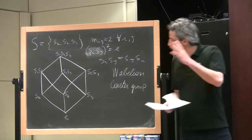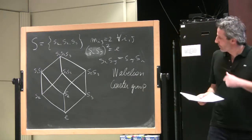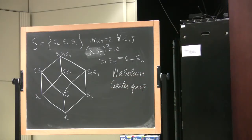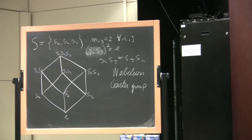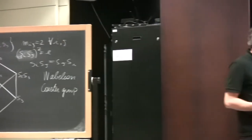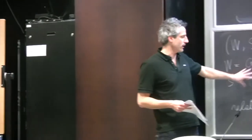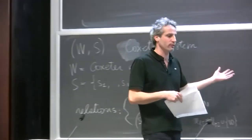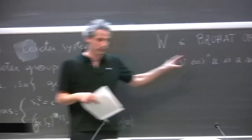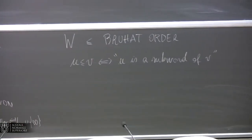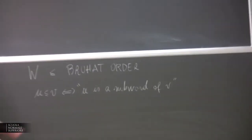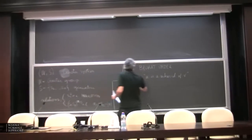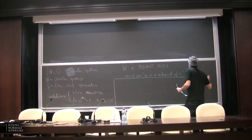So this is how you should think of a Coxeter group during this talk. Coxeter groups have an algebraic structure, a group structure, and a combinatorial structure — the structure of the poset.